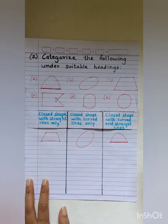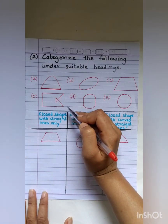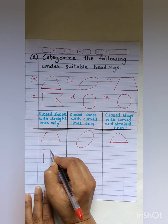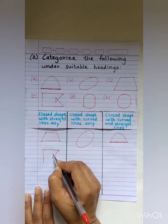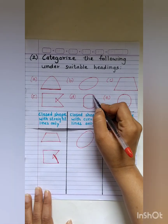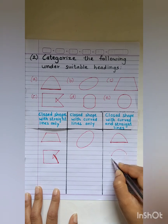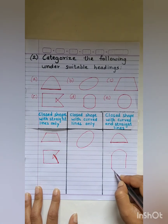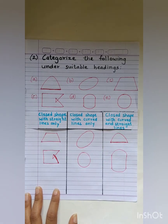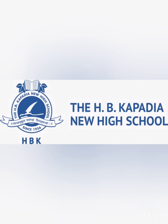The next figure also has straight lines with no curved lines, so we draw it under straight lines only. Moving to the next one — it has a curved line, then straight, then curved, then straight — so this figure has both curved and straight lines. The last one has only curved lines. Great, wasn't it? You're very patient. Thank you.